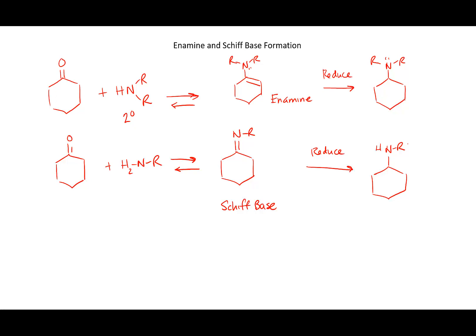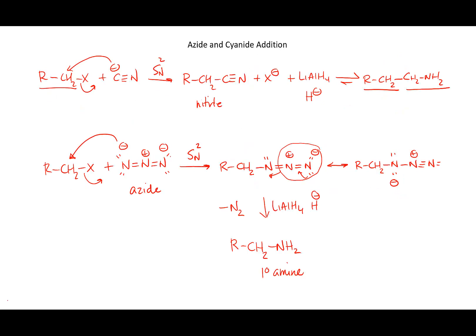This is a kind of reductive amination. The question is what kinds of reagents would I use to do these reductions. We could use something like hydrogen and palladium and add two hydrogens across each of the double bonds - that would be one way to do the reduction. You might also ask about lithium aluminum hydride, and yes - we need to talk about that mechanism, coupling it with how we reduce the nitrile and azide to primary amines, in the next video.